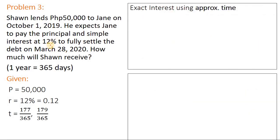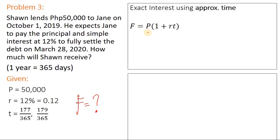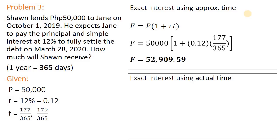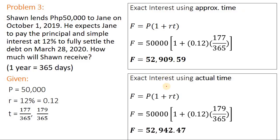Let's compute exact interest using approximate time, with t equal to 177 over 365. The formula for final amount is F equals P multiplied by the quantity 1 plus r times t. Substituting: P is 50,000, r is 0.12, and t is 177 over 365. This gives 52,909.59. For exact interest using actual time, with t equal to 179 over 365, you end up with 52,942.47.